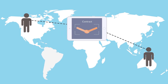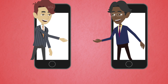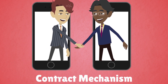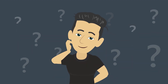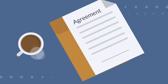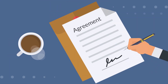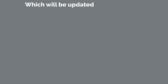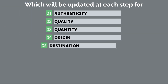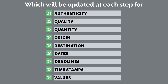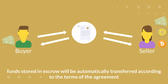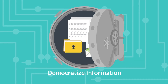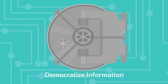Smart contracts allow two people from any parts of the world, with no fields of particular expertise or knowledge of each other, to interact with complete confidence and trust through a self-executing contract mechanism — which has previously only been possible with the presence of a trusted third party. Imagine a purchase agreement between you and anyone for literally anything, updated at each step for authenticity, quality, quantity, origin, destination, dates, deadlines, timestamps, and values. Upon completion, funds stored in escrow would be automatically transferred according to the terms of the agreement.